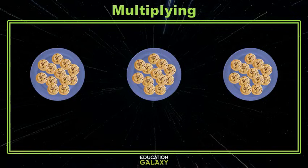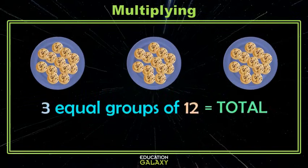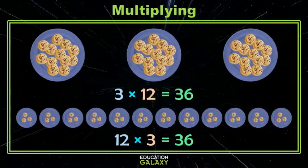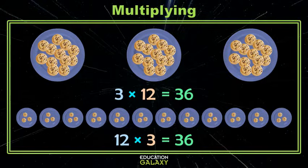When we have equal size groups and we're looking for a total, that's a good time to multiply. We also learned that if we're multiplying two numbers, it doesn't matter what order we multiply. We still get the same value.